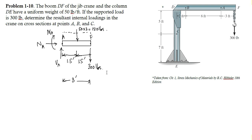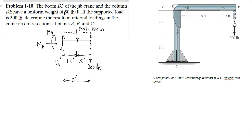In this free body diagram, the 300-pound force at point F is due to the force acting on the hook. The 150-pound force is due to the self-weight of the member, given as 50 pounds per foot — so for three feet, it will be 150 pounds. The unknowns VA, NA, and MA are the resultant internal loadings that we have to find out, and these can be calculated by applying the conditions of equilibrium.